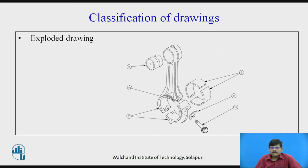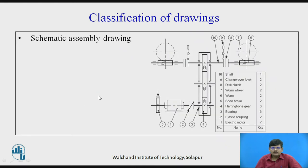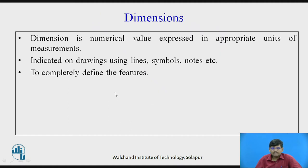Then we have exploded drawing. Exploded drawings are also provided with products where you need to assemble them, showing how each part fits in or how each part can be removed. Each part is numbered and named. Then we have schematic assembly diagrams, used where very detailed drawing is not possible and you want to convey how power is being transmitted or how the flow of energy takes place. Here, for example, it shows a prime mover and how power is transmitted with the help of gears — a simple line diagram is called a schematic assembly diagram.